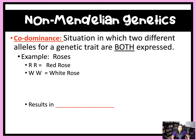So let's look at roses. If we have red roses, we will use capital R for the allele because red is the dominant trait. But in this situation, white is also dominant, so we will also use a capital W for white. So you've got a capital R and a capital W for this situation.